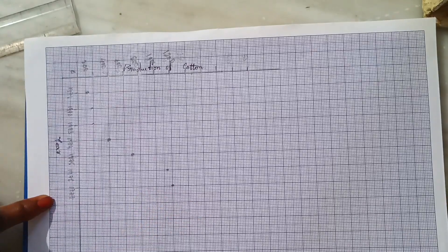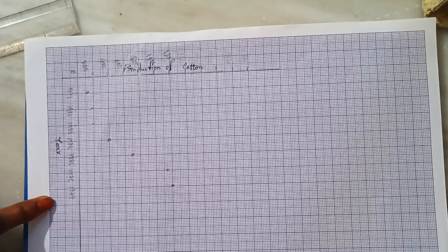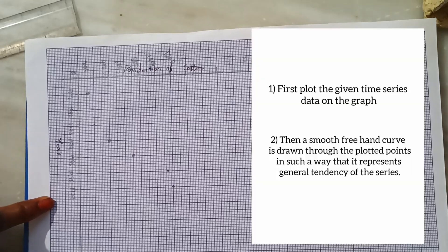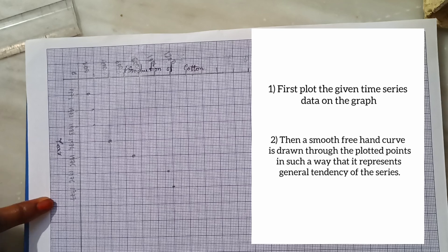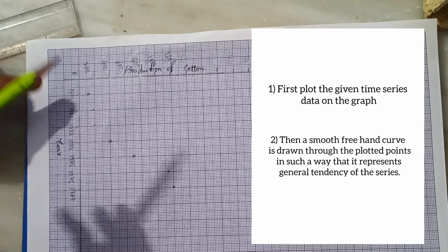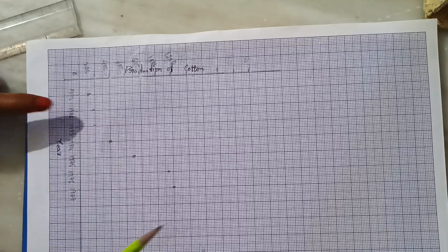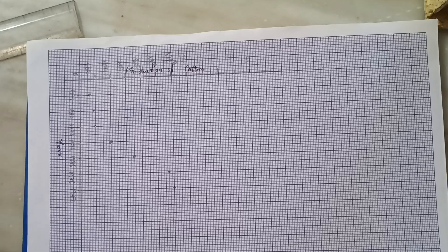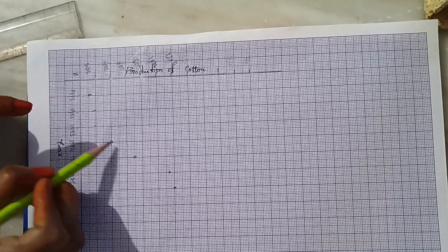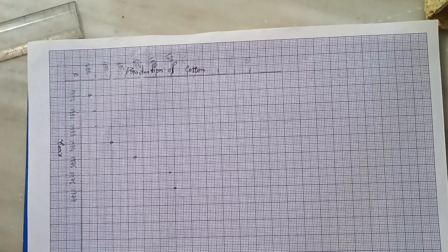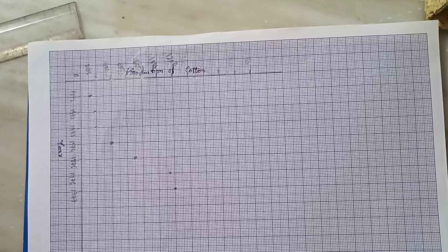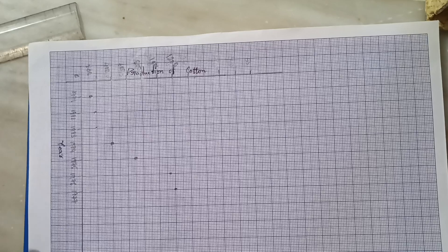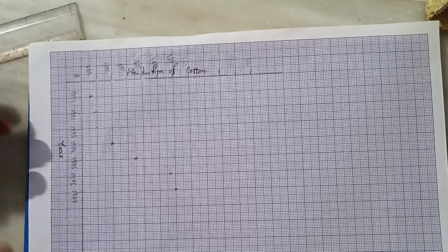After plotting the points, the second step is to draw a smooth freehand curve through the plotted points in such a way that it represents the general tendency of the series. We draw a smooth freehand curve that represents the trend.